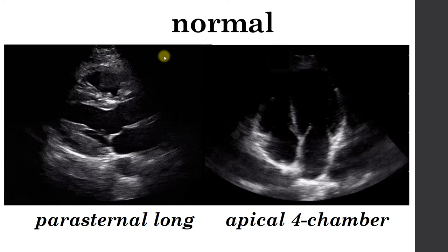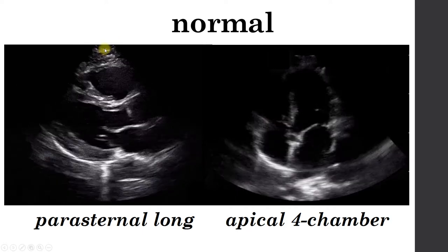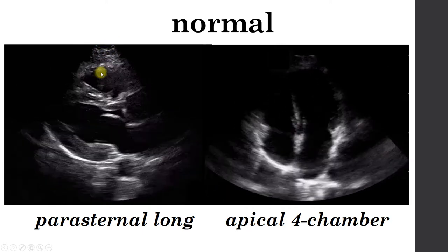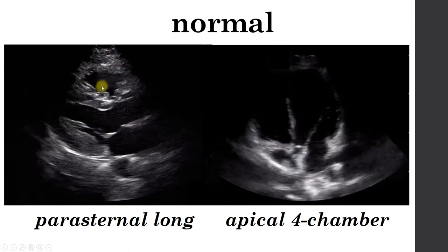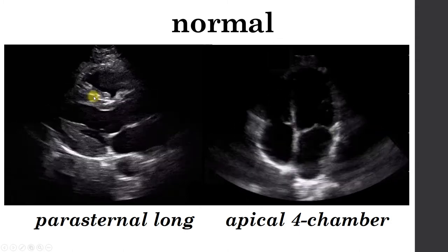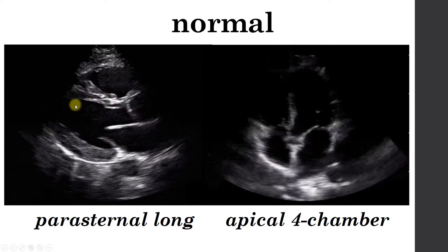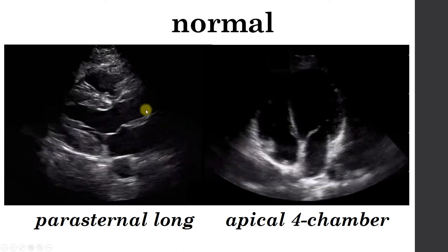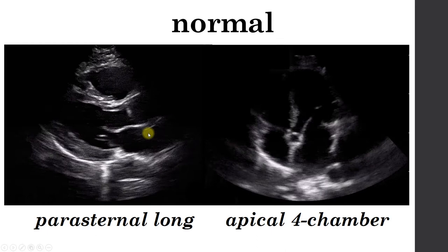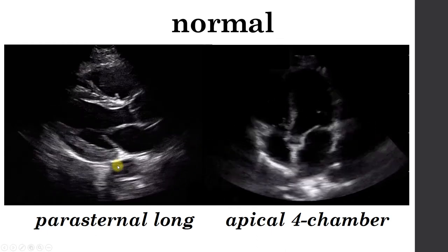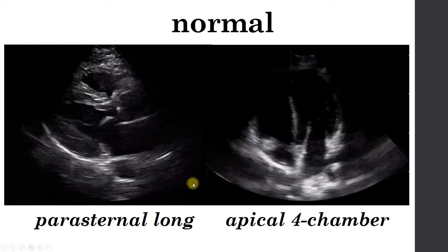Here is what the normal views look like — both the parasternal long and the apical four-chamber view. On the parasternal long view, the very first thing you're going to hit is the skin and soft tissue. Right beneath that is the patient's right ventricle, which normally should look triangular and like a slice of pizza. Next is the interventricular septum, and beneath that the left ventricle — a large cavity and chamber. Next to the right ventricle is the ascending aorta, and just beneath that the left atrium. The most posterior structure, all the way posterior to the left ventricle, is the descending aorta.